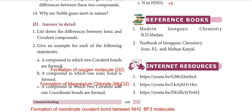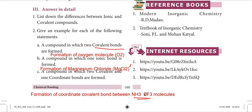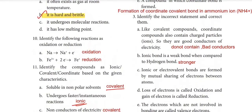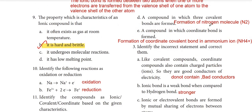Second detail question: give an example for each. A) A compound with two covalent bonds: formation of oxygen molecule, O2. B) A compound with one ionic bond: magnesium chloride, MgCl2. C) A compound with two covalent and one coordinate bond: formation of coordinate covalent bond between NH3 and BF3 molecules. D) A compound with three covalent bonds: formation of nitrogen molecule, N2. E) A compound with a coordinate covalent bond: formation in ammonium ion, NH4⁺.